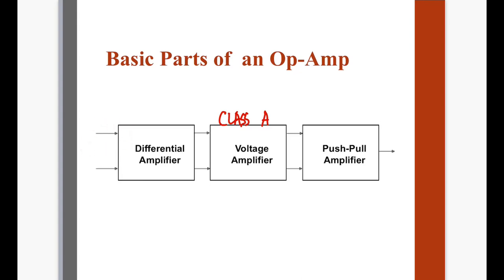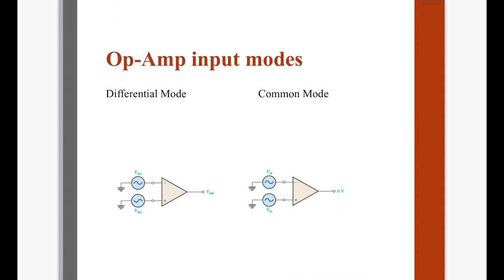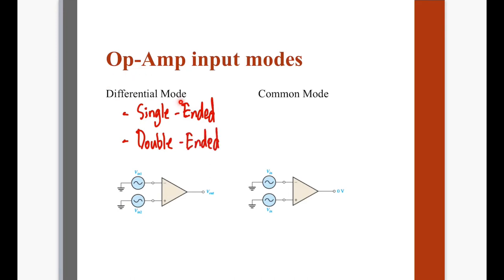Dahil nga may dalawang input tayo sa differential amplifier, we can see na merong iba-ibang ways of putting input sa isang op-amp — we have the differential mode and the common mode. From the term differential mode, ang ginagawa niya is in-amplify niya yung difference of the two signals. Kapag single-ended, only one input has a signal but the other should be connected to ground — pwedeng yung inverting input lang yung may input, then yung non-inverting pwedeng straight na sa ground, or vice versa.